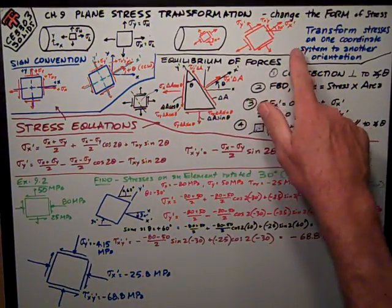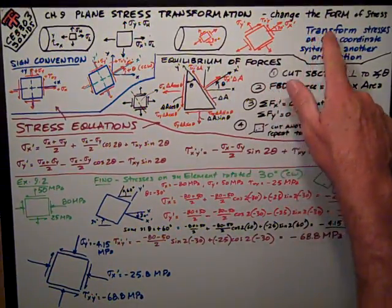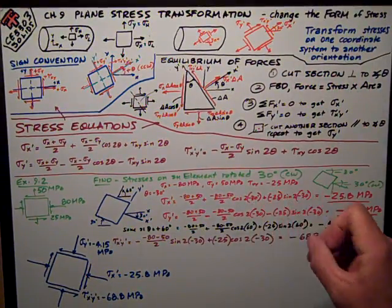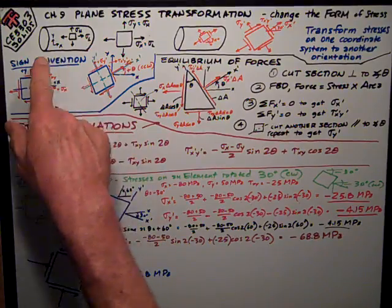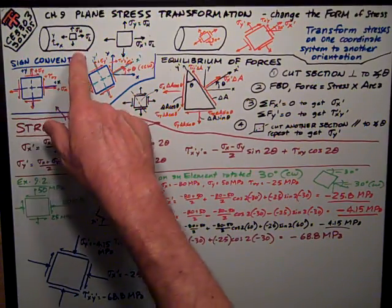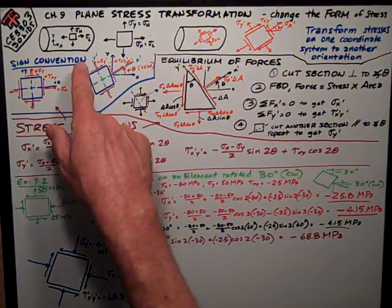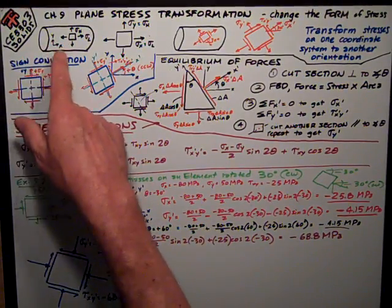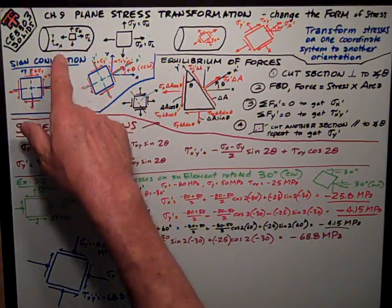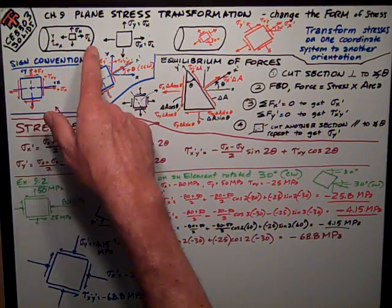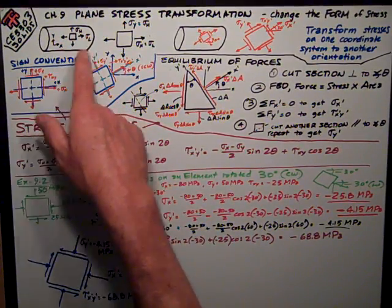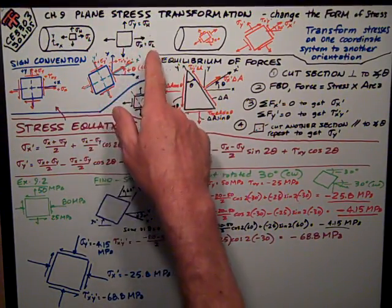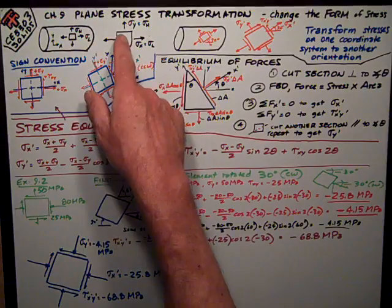The word transformation means to change the form of something. In this case, to change the form of the stress. Look at an example of a thin wall pressure vessel where we have in the y and x coordinates a hoop stress that is in the y direction and longitudinal stresses which is in the x direction. So we can calculate those and show it in a little stress element here.